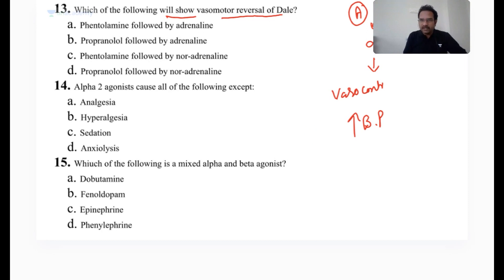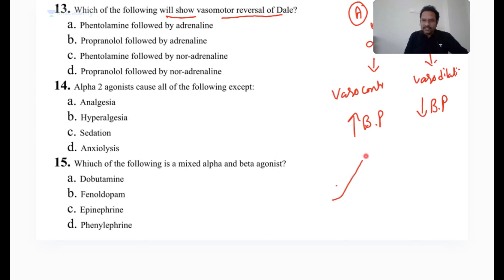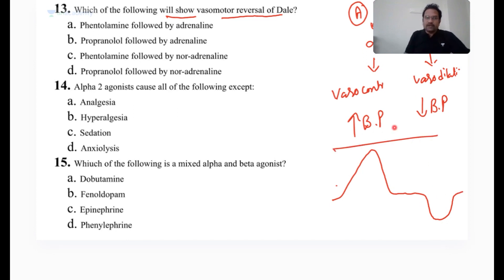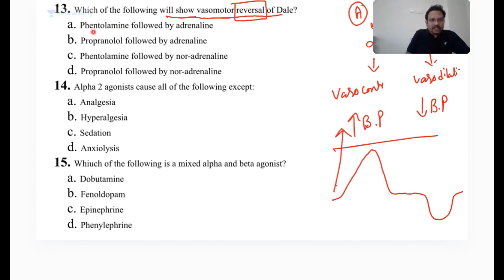After that, it will slowly act on the beta-2 receptor. The response on beta-2 is vasodilation — smooth muscle dilation — so this reduces BP. What DEL said is: when epinephrine or adrenaline is given, initially a sharp rise in BP is seen, and then slowly a decrease in BP is seen. This is what is called the Dale phenomenon. Now, look at the options.